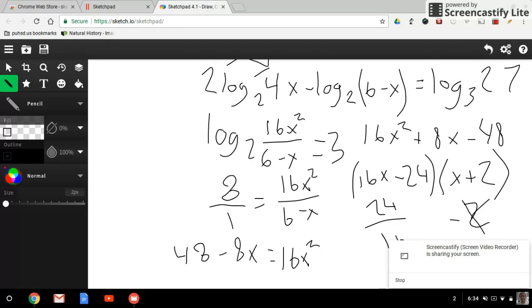Log base 3 of 27, you can easily just make that your own log problem and set 3 to the x equals 27. So 3 to what power equals 27? That's simple math, so it's 3. On the end, you can just erase all that and write 3.